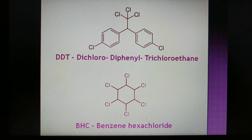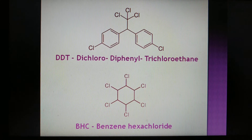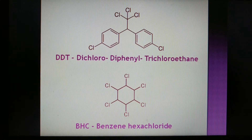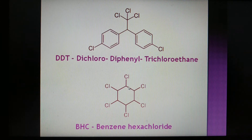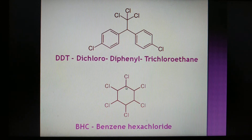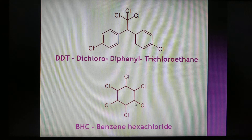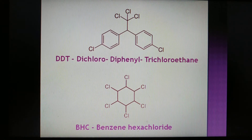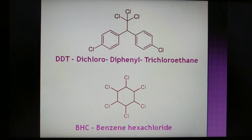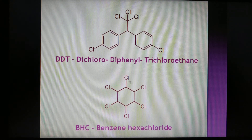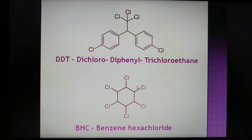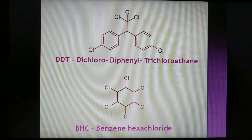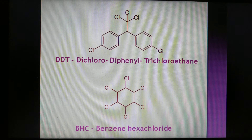BHC stands for Benzene Hexachloride. Its formula is C6H6Cl6. It has six carbons, and each carbon has one hydrogen — giving six hydrogens — and each carbon also has one chlorine — giving six chlorines. So the molecular formula is C6H6Cl6 and the full form is Benzene Hexachloride.